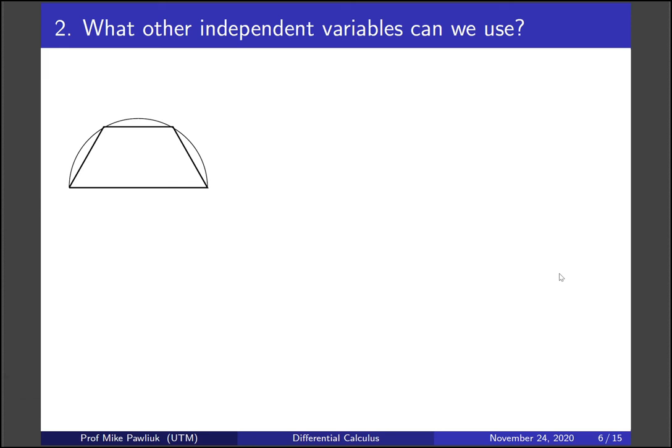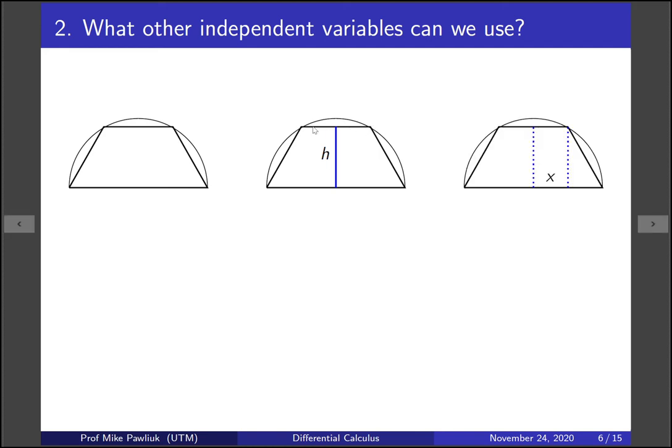Our next question is what other independent variables can we use to solve this problem? I think the most natural thing that controls the trapezoid is the height. You can imagine that the height starts at nothing and you'll have a really thin trapezoid, and as you open up the height you'll get larger trapezoids until you have it all the way at the top and you have a triangle. That's one possible independent variable. Another one would be the part of the top here, the length of the top. So I'm going to illustrate this using a variable called x, the length from the center to this vertex. If your x is very thin you'll have the triangle, and if your x is very wide then your trapezoid will be very short. So these will both work.